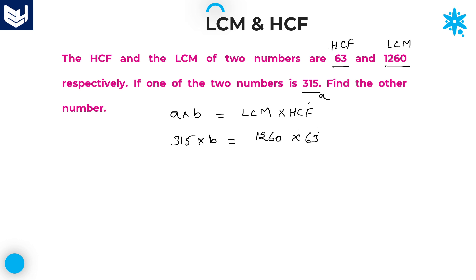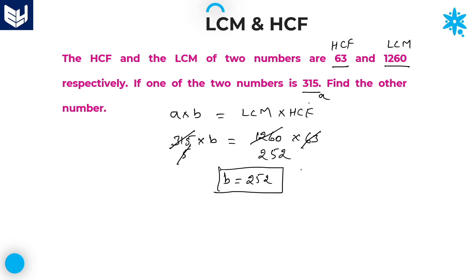Now you can take cancellation: 63 and 315 cancel to give 5, then cancel with 1260 using the five table — giving 252. Therefore the second number is equal to 252. The second number is 252 and the first number is 315. If you compute the HCF of these two numbers you get 63, and LCM is 1260. So the answer for this question is 252.